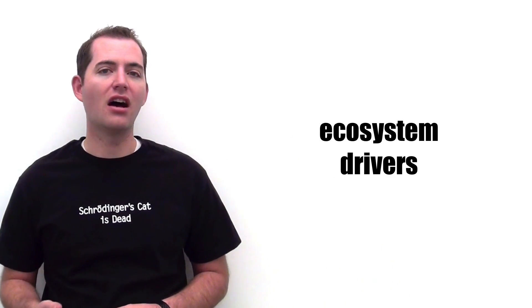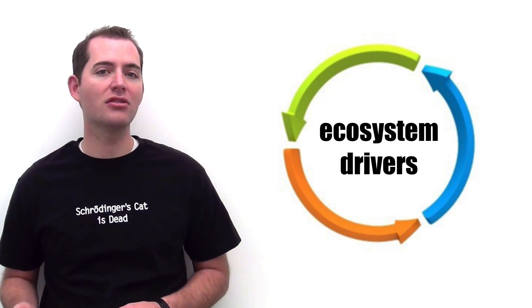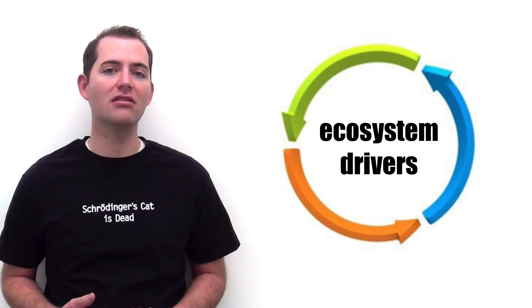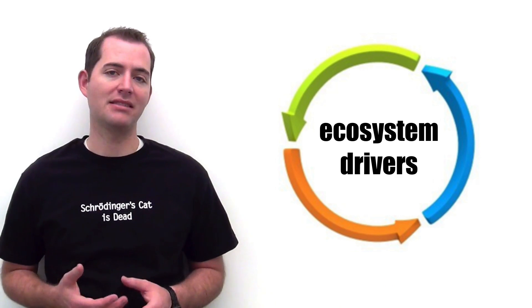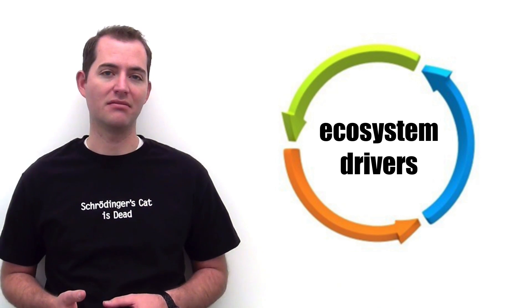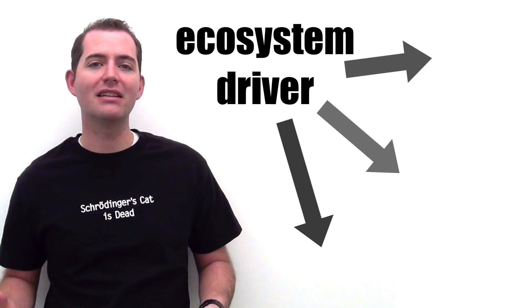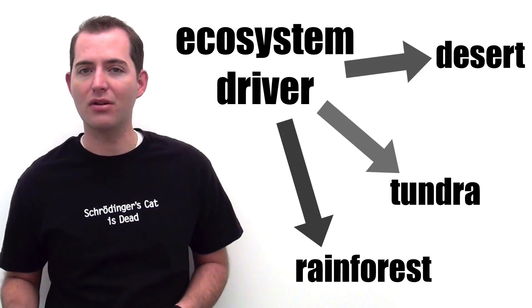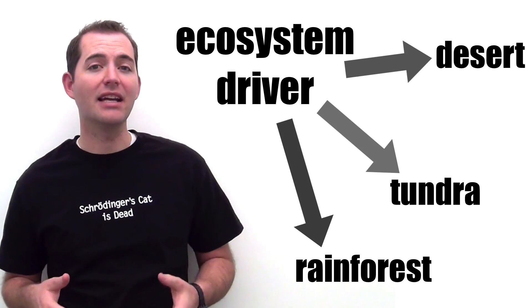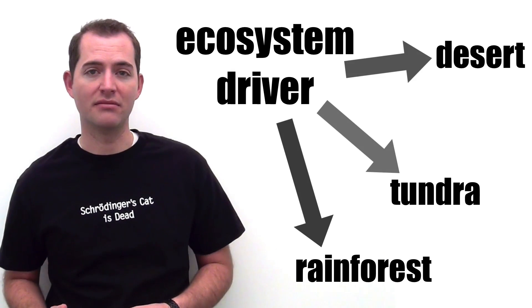Ecosystem drivers often interact with each other, meaning that one driver can increase, decrease, or change how another driver impacts the ecosystem. In many cases, the same ecosystem driver will play out in different ways in different regions around the world, and the effects and impacts of drivers can change over time.